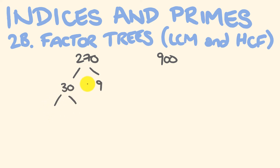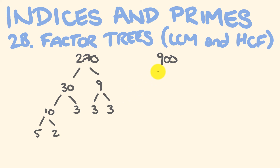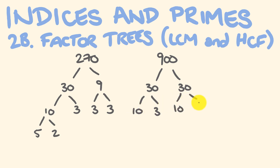These are both composite numbers. 10 and 3: the 3 here is a dead end — it's a prime number — but 10 can be broken up into 5 and 2. And 9 breaks into 3 and 3. So we've hit the stage where all of 270's factors are prime now. Let's do the same for 900. We have 30 by 30. These can be broken up into 10 and 3, and 10 and 3. The 10 can be broken down further into 5 and 2, since 10 has the factors 5 and 2.